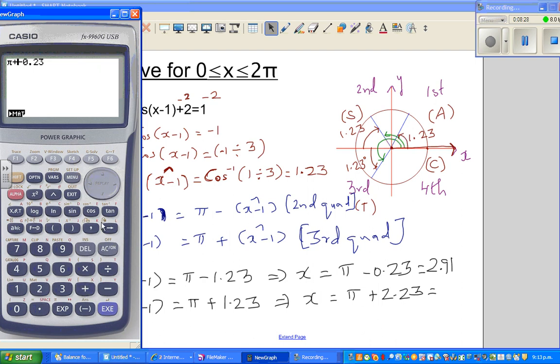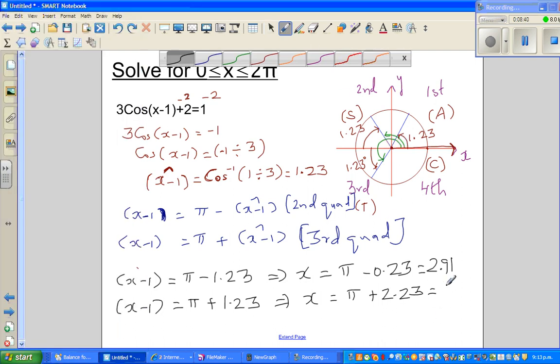And the other angle would be π plus, let me cancel this, π plus 2.23, which is 5.37. So that's perfect. I will check this on the calculator. So these are the two answers for this equation.